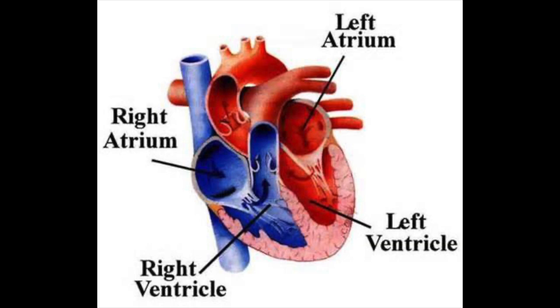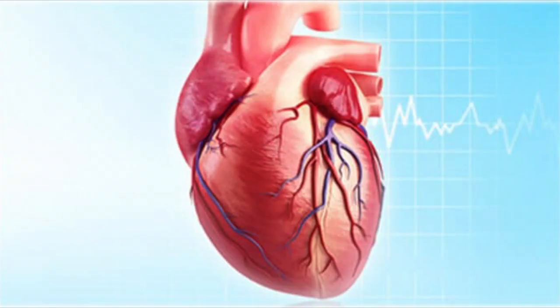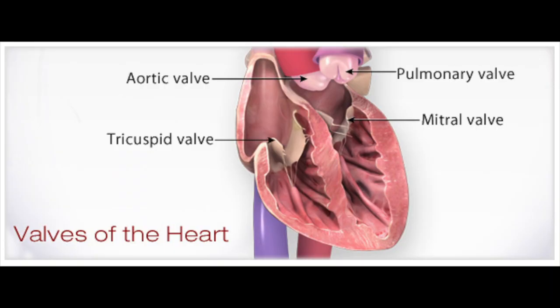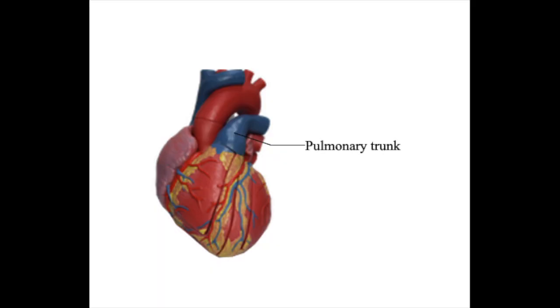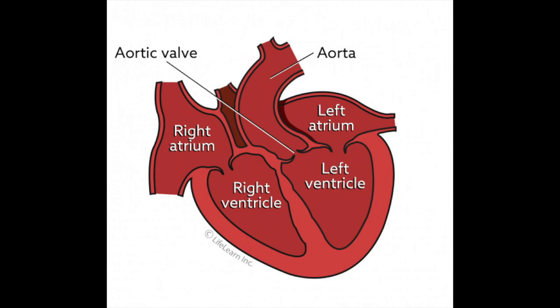The two atria are responsible for receiving blood from the veins in the heart. As the blood enters and leaves these four chambers, four valves — the mitral valve, the aortic valve, the tricuspid valve, and the pulmonary valve — help keep the blood moving in the right direction and flow. The mitral and tricuspid valves are located in between their respective atria and ventricle. The pulmonary valve is approximately located between the right ventricle and the pulmonary trunk, which is the artery that leaves the right ventricle. The aortic valve is located between the aorta and left ventricle.